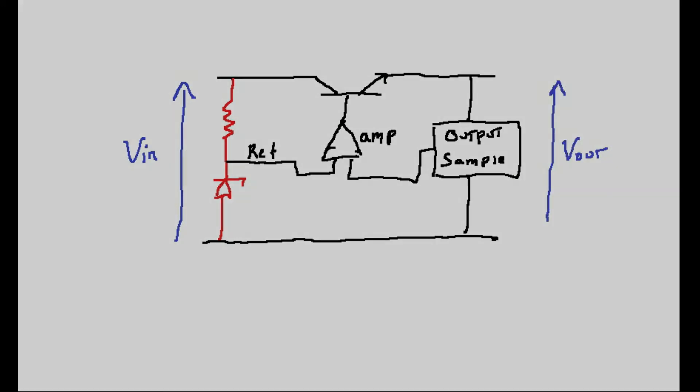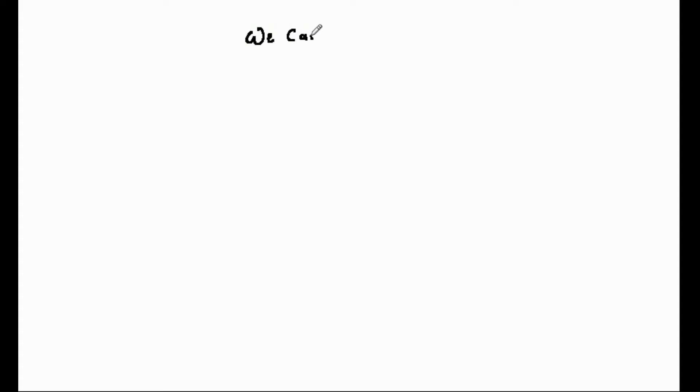Now, in reality, we can buy all this on a chip, and that's what we normally do, unless we have a special reason for actually making it with discrete components. Such a circuit is shown on the screen.